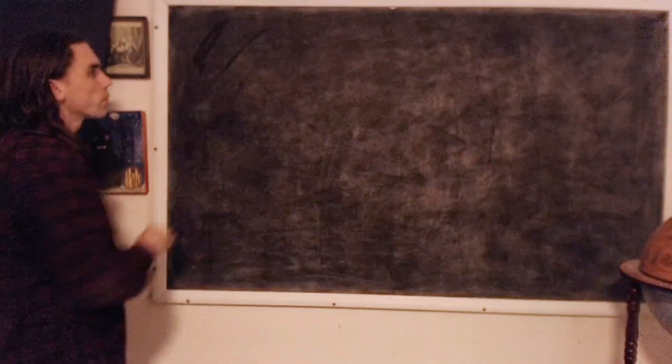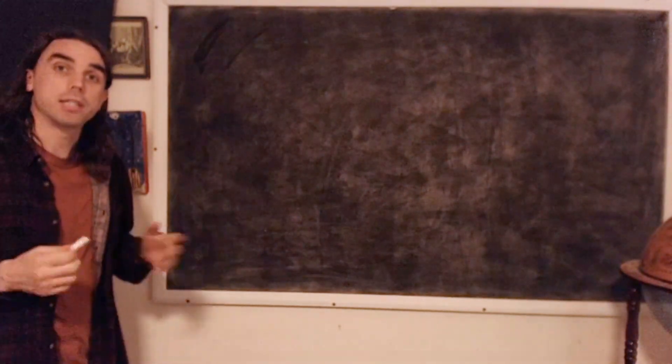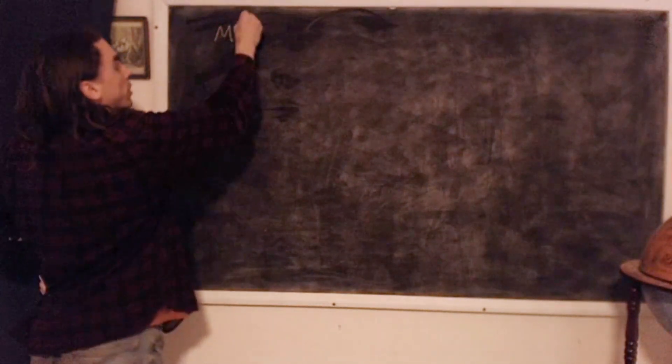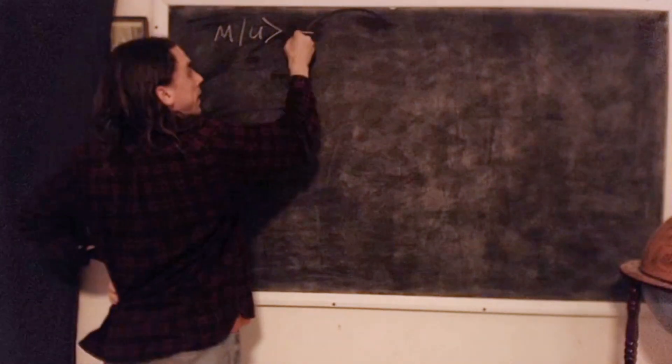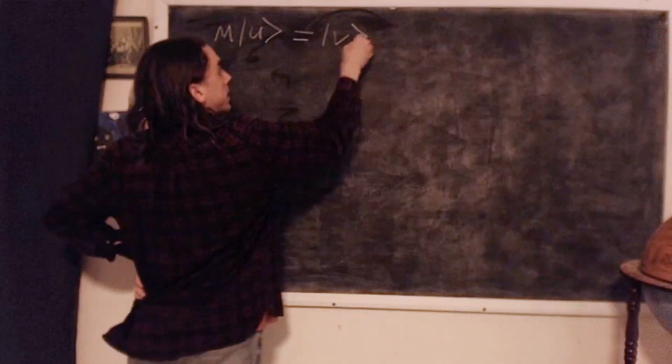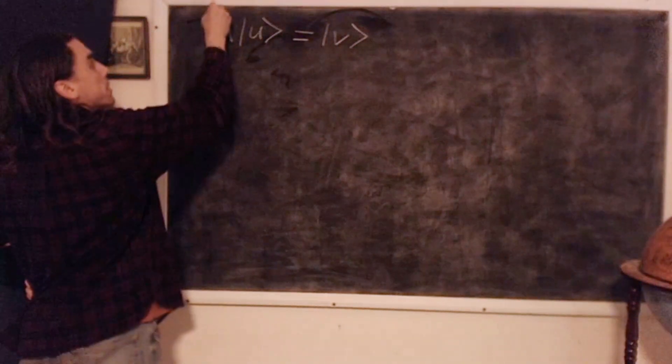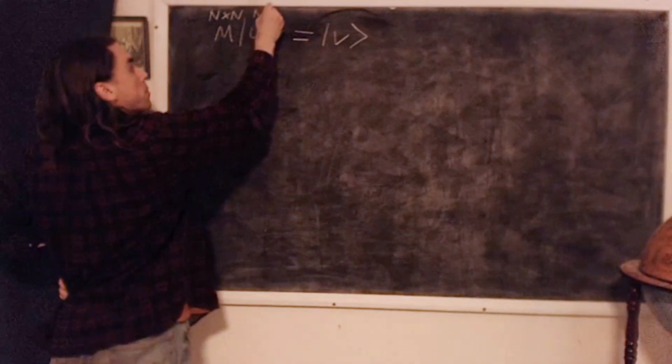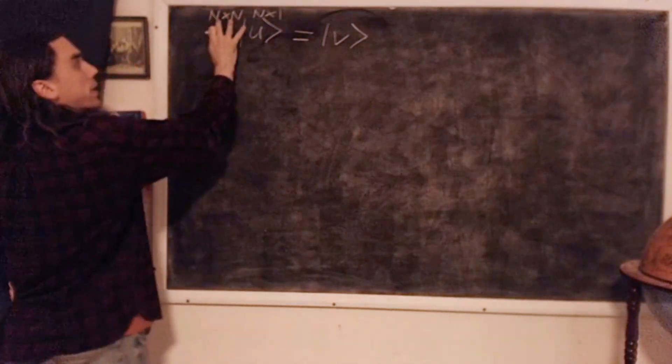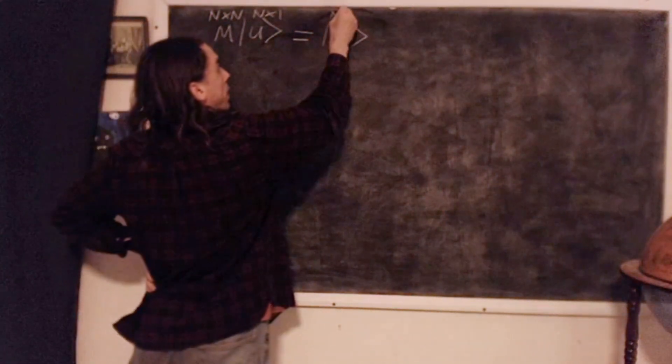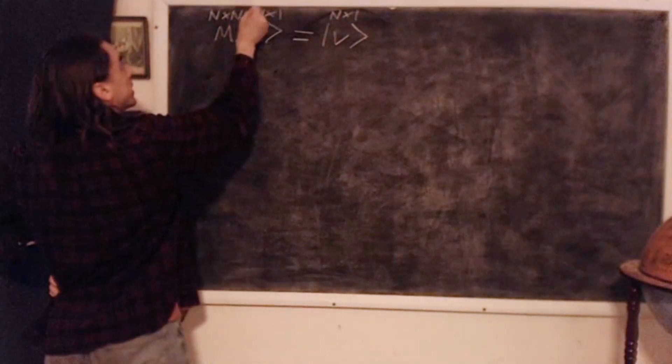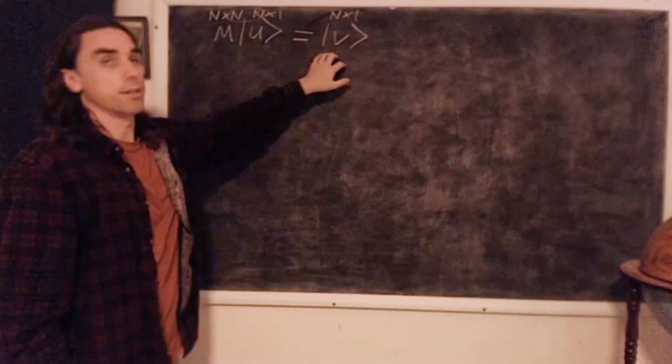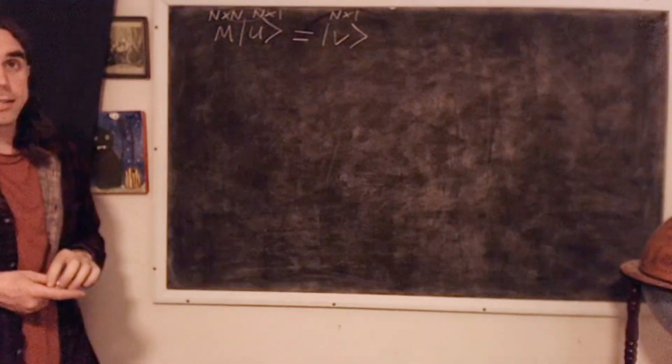Alright, so let's take a look at matrices acting on our vectors. Okay, so if we have a matrix M acting on a vector U. In general, we expect to get some other vector, let's call it V. M is an n by n matrix. U, being a vector, must be an n by 1 matrix. And an n by n matrix acting on an n by 1 matrix gives us an n by 1 matrix. So a matrix acting on a vector gives us another vector in this complex space. So that's good news.